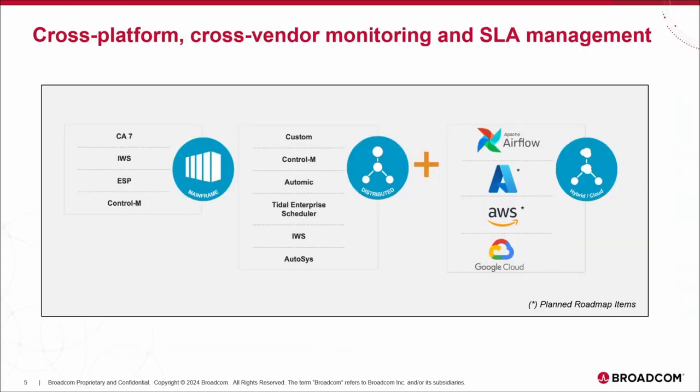In terms of unified observability, here is the list of automation solutions we support today. On the mainframe, we have Broadcom solutions ESP and CA7, and we also support IWS and Control-M on the mainframe. On the distributed side, we support IWS, Control-M, Autosys, and Atomic as Broadcom offerings, and also Tidal Enterprise Scheduler. We support Airflow — native Apache Airflow, Google Cloud Composer, or MWAA — all within a single instance of AAI.